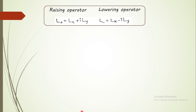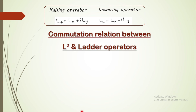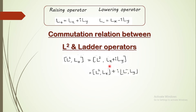Now let us understand, using these definitions of ladder operators, what are the commutation relations between the square of the angular momentum and these operators. The commutation relation between L² and the raising operator equals the inner product of L² with Lx plus iLy. Separating the brackets we get [L², Lx] plus i times [L², Ly]. We have seen that the square of the angular momentum commutes with the components of angular momentum, meaning [L², Lx], [L², Ly], and [L², Lz] are all equal to zero.